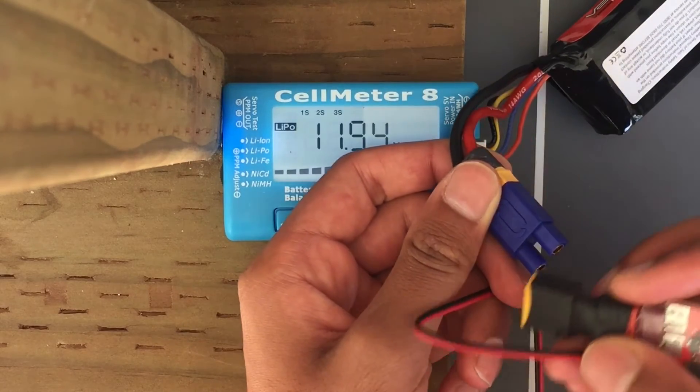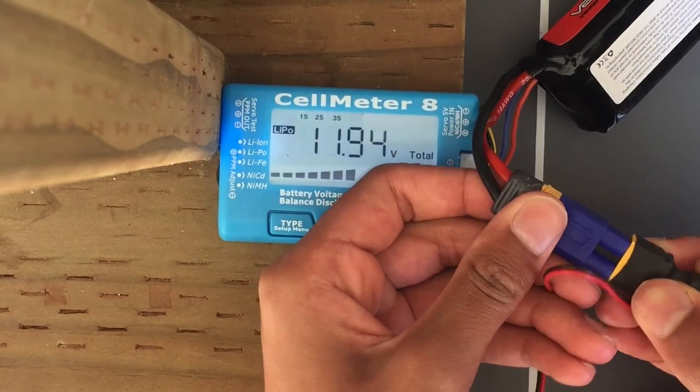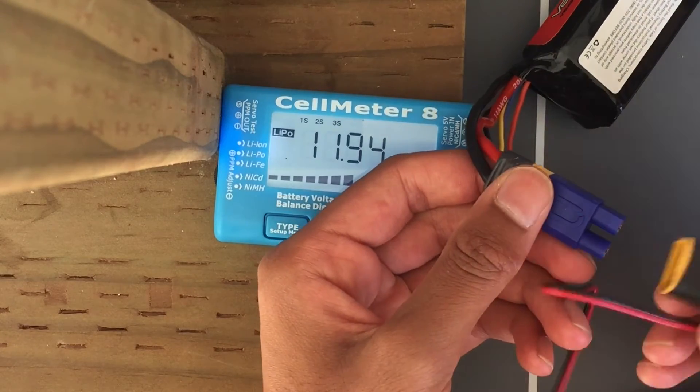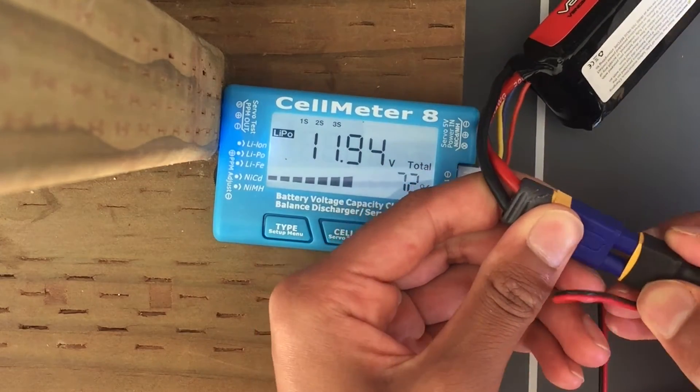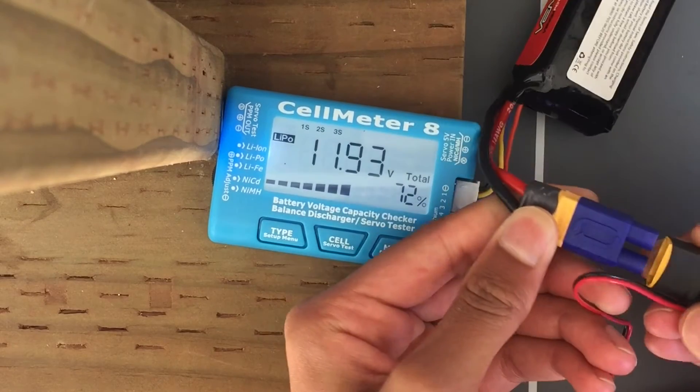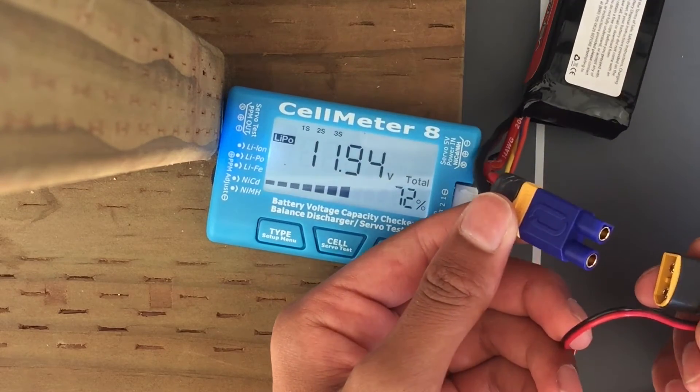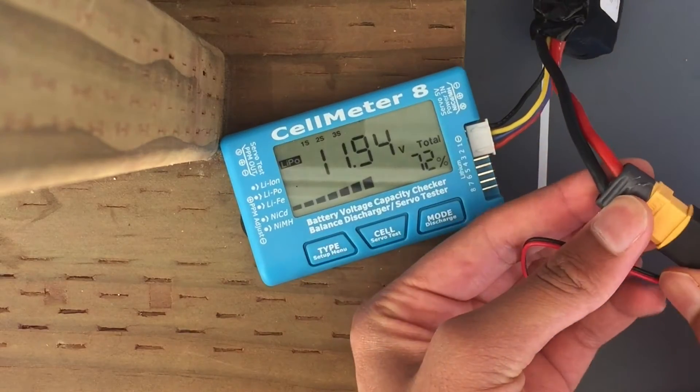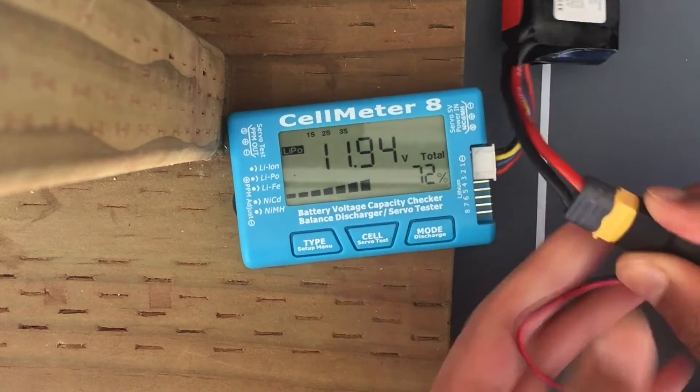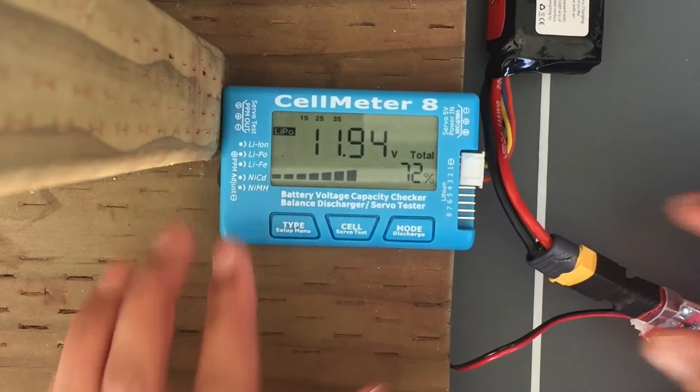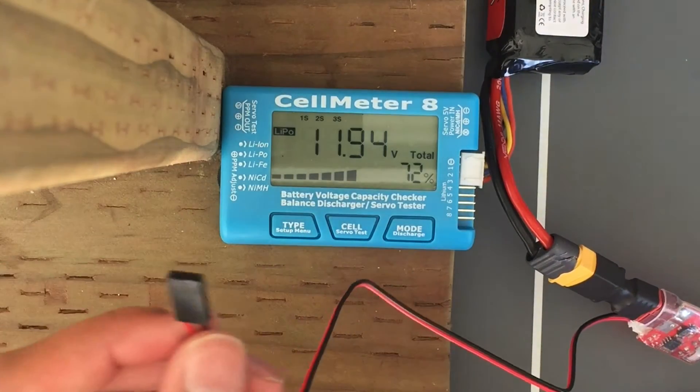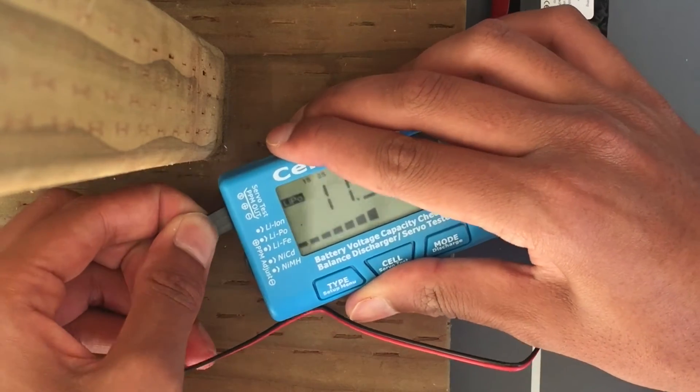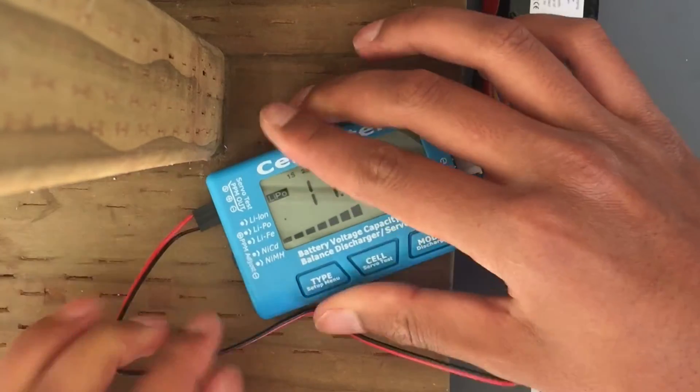Then for the discharge, you would start off by plugging the battery into the XT60 connector that I created. Plug this in—this creates a connection. Then finally, you take the other end which is connected right here and you plug it into the other side right here.